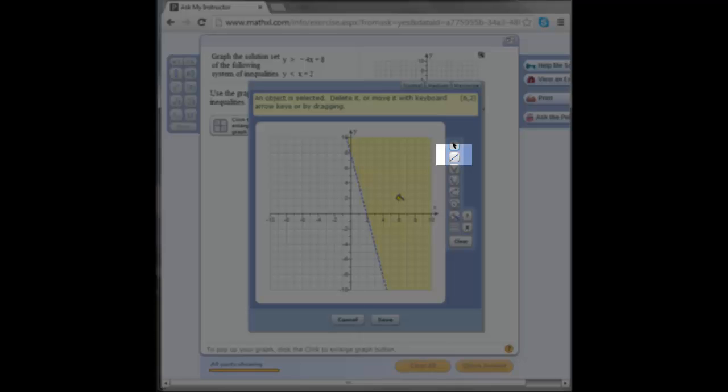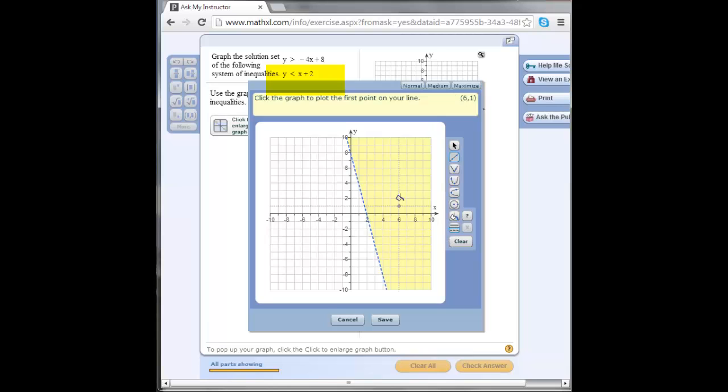So first we're going to graph. I'm going to click on the line again. I'm going to do a dotted line because it's just less than 2. It's not less than or equal to 2. I'm going to start at my y intercept, which is 0 comma 2, and I'm going to move by my slope, which is over 1, up 1. Now I'm going to go ahead and shade below that line.